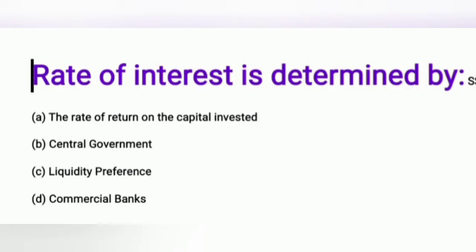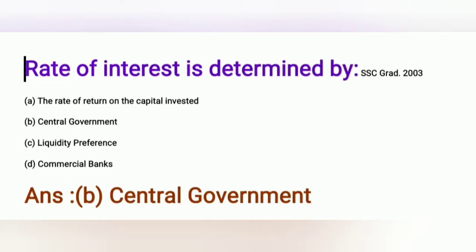Question: The rate of interest is determined by — A) rate of return on the capital invested, B) central government, C) liquidity preference, D) commercial banks. The answer is liquidity preference.